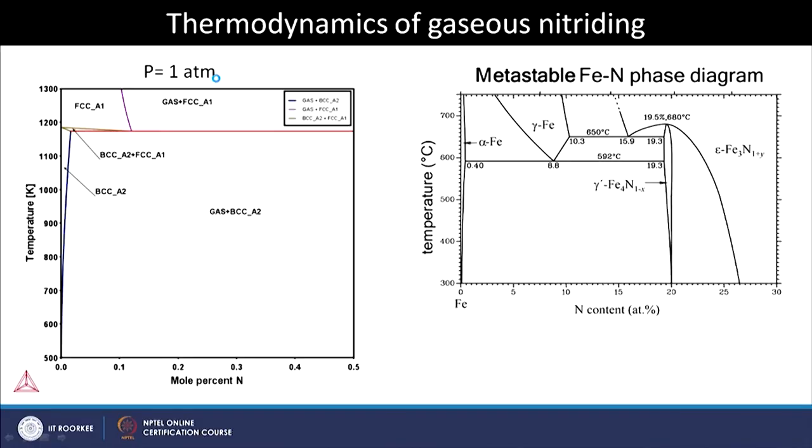We were discussing in the last class about gaseous nitriding, starting from the thermodynamics of gaseous mixtures. If we place a solid sample inside a gaseous mixture maintained at constant temperature and pressure, we looked at what the equilibrium would be. When we use N2 gas — molecular nitrogen gas — as a source of nitrogen to introduce nitrogen into solid samples, we looked at the thermodynamics of that situation. From the phase diagram, if one atmospheric pressure of N2 is imposed on the sample surface at different temperatures,